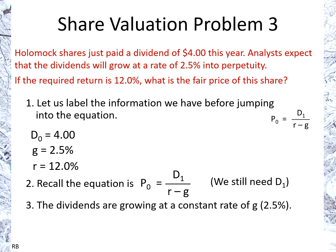We can calculate D1 because the dividends are growing at a constant rate. D1 will be D0 growing by 2.5%, so we calculate it as D1 equals D0 times (1 plus G), which is 1 plus 2.5%, giving us $4.10.